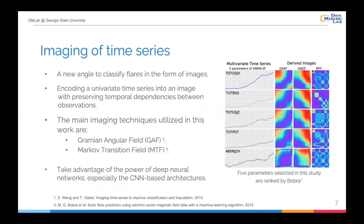After introducing the data, I'm going to elaborate the primary part of this paper, imaging of time series. The goal is to provide a new angle to classify flares with images. The idea is to use different imaging algorithms to encode a univariate time series into an image while preserving temporal dependencies between observations. Some visualization examples are on the right hand. The main imaging techniques involved in this work are the Gramian Angular Field and the Markov Transition Field. The reason for converting time series into images is because we want to take advantage of the power of deep neural networks, especially the CNN-based architectures.